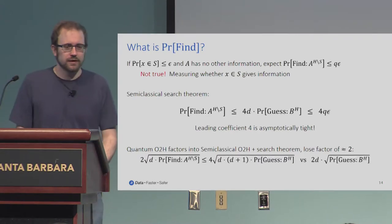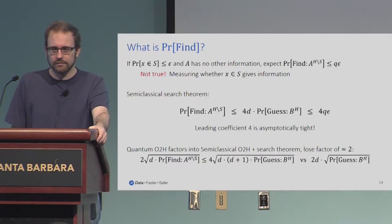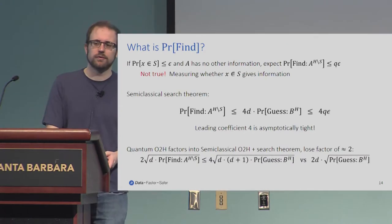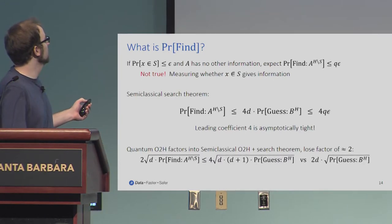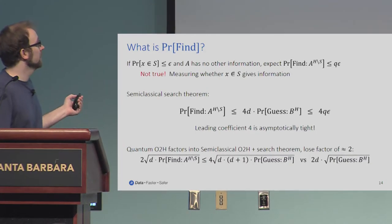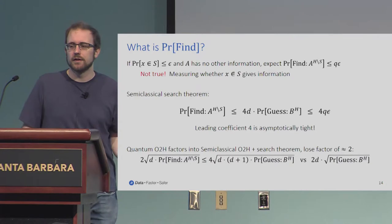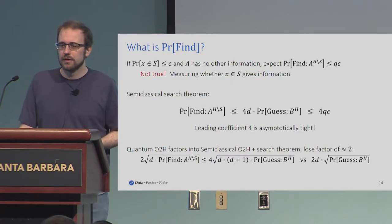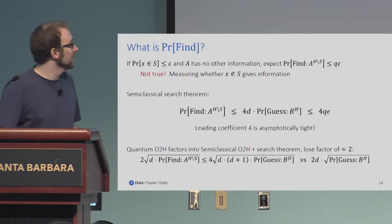An important detail in these proofs using semi-classical oracles is: what is the finding probability? If you have a classical oracle that takes classical input, gives classical output, and you have a criterion that holds with probability epsilon everywhere, and the adversary has no other information about where to find it, then the finding probability is necessarily less than q*epsilon — less than the number of queries times the probability that any one of them succeeds. But if the oracle gives quantum output, it could be up to q^2 * epsilon, or rather d*q*epsilon as we'll see later.